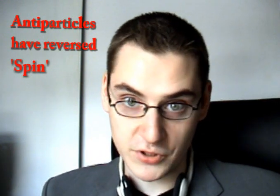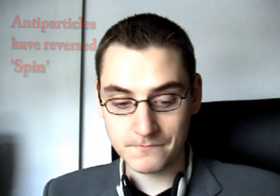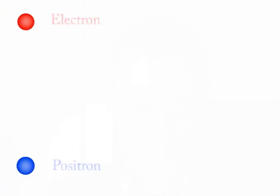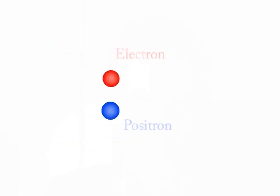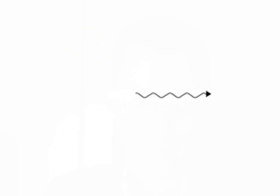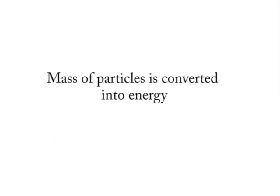Another property that's reversed for anti-particles is their spin, but that's something I'm going to get into another time. What's really interesting here is what happens when particles and anti-particles collide. For instance, when a particle like an electron and its corresponding anti-particle, a positron, come in contact, the two will annihilate, leaving nothing but gamma radiation — a gamma photon. In other words, the mass of the two will be converted into pure energy.